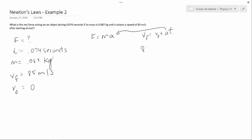So, final velocity is 85, initial velocity was 0, plus acceleration, which is our unknown, times 0.074. We find that our acceleration is 1148.65 meters per second squared.